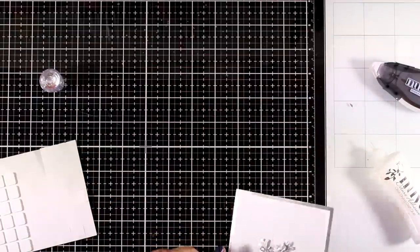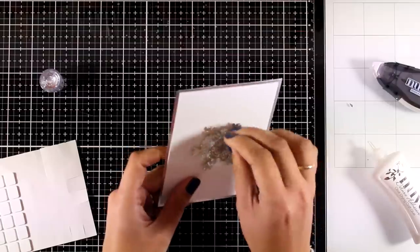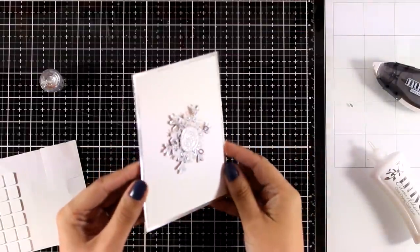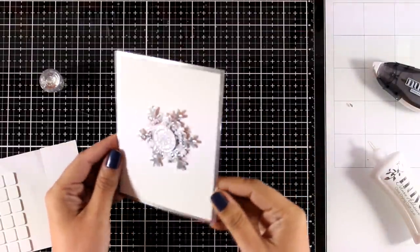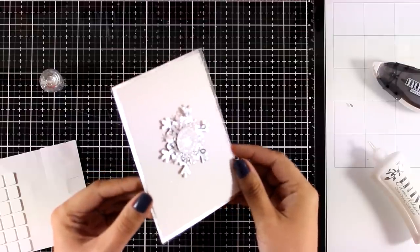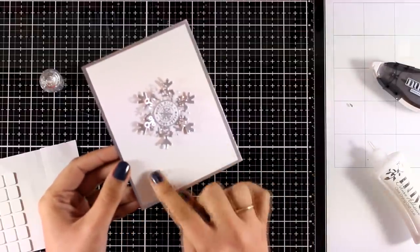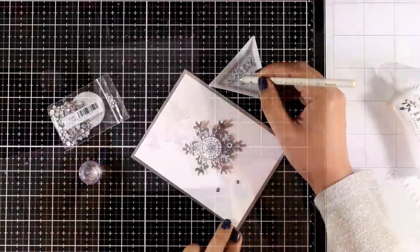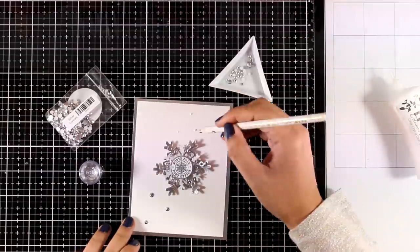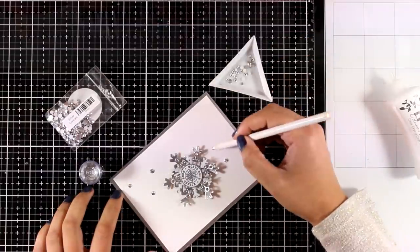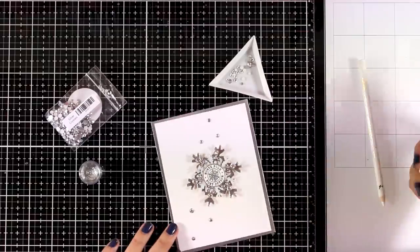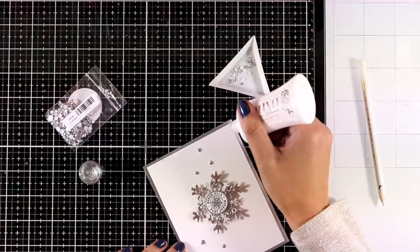And the top layer is going to be my embossed circle which is going to go at the center with a foam square at the back. Now if you like you can stamp a sentiment below the snowflake, there is plenty of space there. You can even cut out smaller snowflakes and embellish the white space all around. I'm going to keep it quite simple for today since I absolutely love the look. And I'm just going to add a few silver gems here and there.